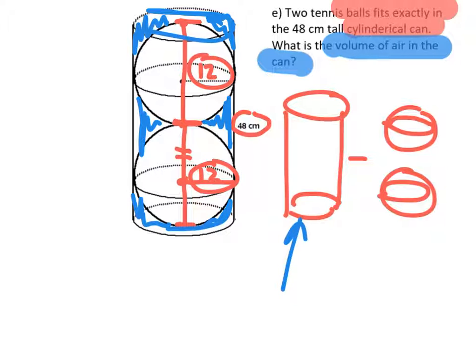Find the entire can, subtract one sphere, subtract the other sphere, and then you should have it.